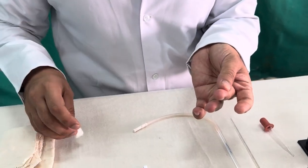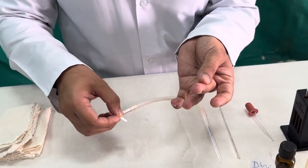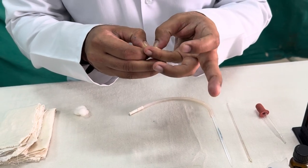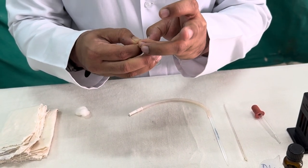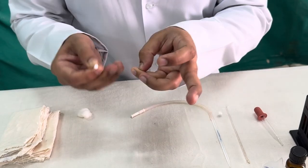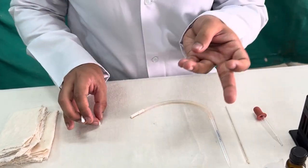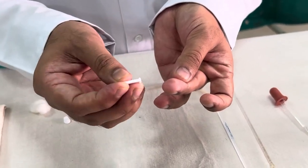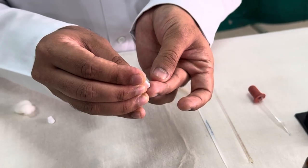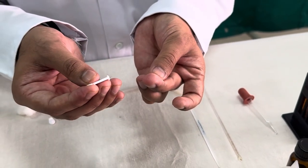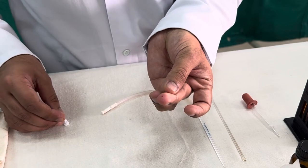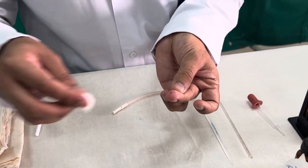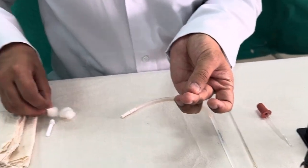Then by using a sterile lancet with one stroke - this is the most important part where students will find very much difficulty, but once you practice these things it will be easy for you. So with one firm stroke you have to prick the tip of the finger like this. After that a drop of blood will come. So first few drops, actually one or two drops, you need to discard it because mainly it is tissue fluid.